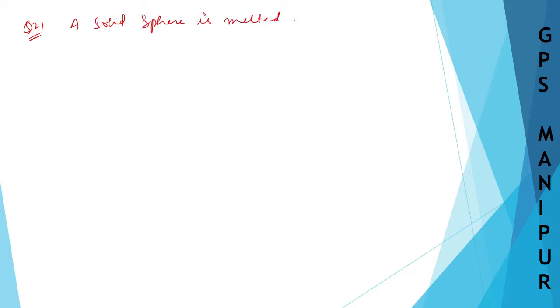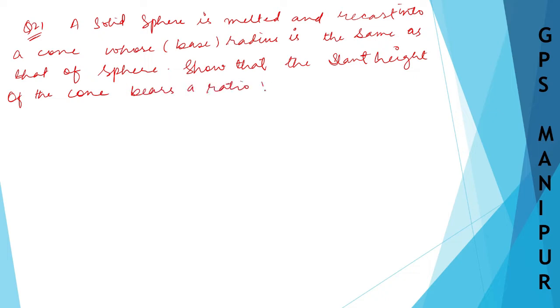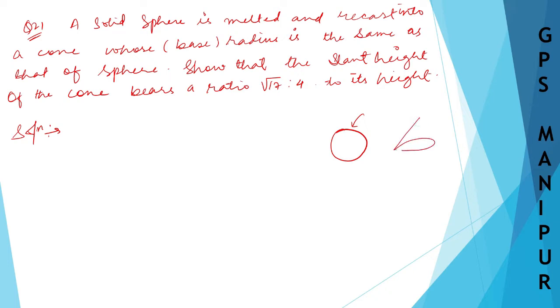We are doing exercise to point three, question number 21. The question says: a solid sphere is melted and recast into a cone. So there is a solid sphere, and you are melting it, hitting it, and converting it into a cone. The base radius of the cone is the same as that of the sphere, so r and r are the same.